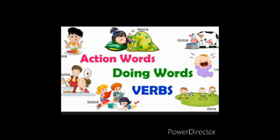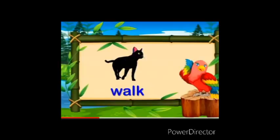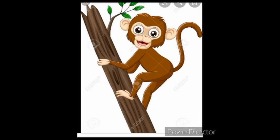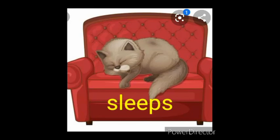These words are called action words or verbs. Not only people — animals and birds also do different actions. Look at these pictures. What do the birds do? Yes, the birds fly in the sky. What does the monkey do? Yes, the monkey climbs a tree. What does the cat do? Yes, the cat sleeps on a sofa.